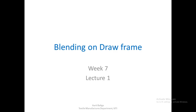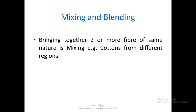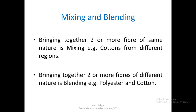Today we are going to cover the topic on blending on drawframe. Let us first understand the difference between mixing and blending. Bringing together two or more fibers of the same nature is known as mixing — for example, if cottons from different regions are mixed together at any stage during processing. Bringing together two or more fibers of different nature is known as blending, for example mixing polyester and cotton together.